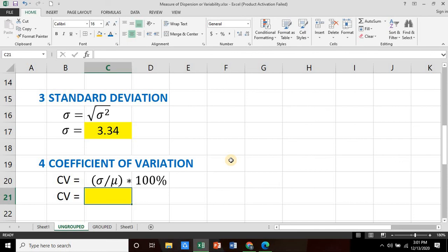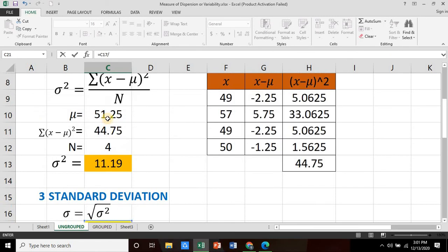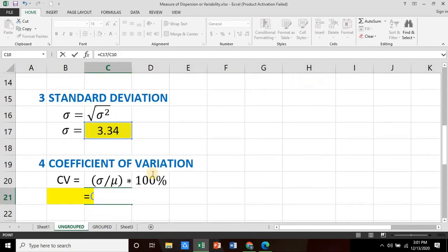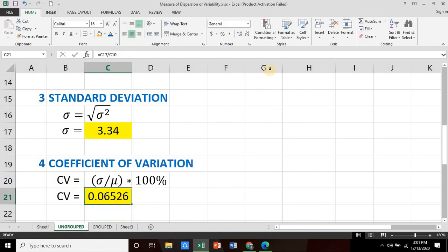And to take our coefficient of variation, we simply take the quotient of our standard deviation and the mean, that is equals standard deviation divided by the value of the mean, which is 51.25. Press enter. And we get a decimal value of 0.06526. Convert this to percent, or simply multiply it with 100%.